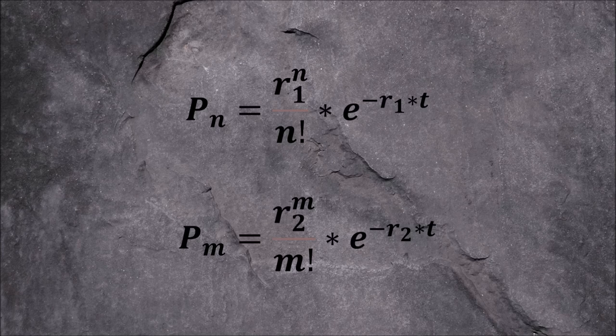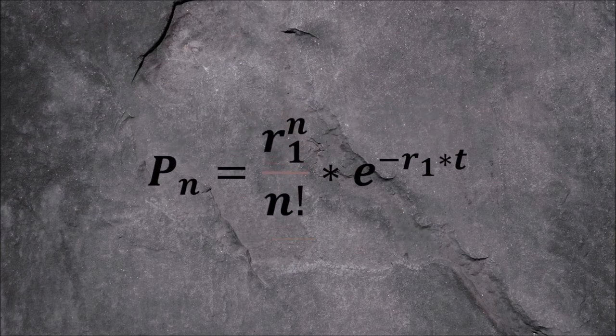With these two formulas, we can calculate the probability P for the possible goals scored by team 1 or team 2, respectively. Let's just look at one of the two formulas as an example and examine the individual factors.